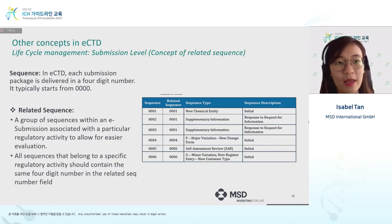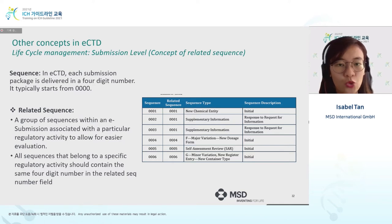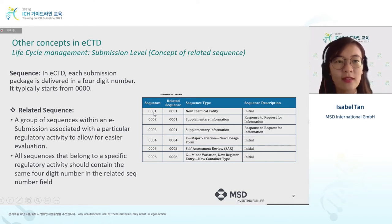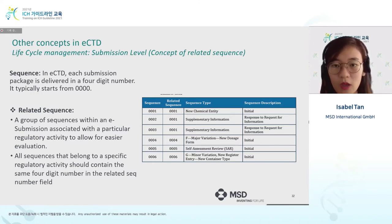The second sub-concept of lifecycle management is the submission level. It allows sequences within an application to be related to each other so evaluators have an easier time. For example, the very first sequence — a new chemical entity — is the initial submission. If the agency comes back with questions, the sponsor submits the next sequence with responses, relating back to sequence one with supplementary information in the response.